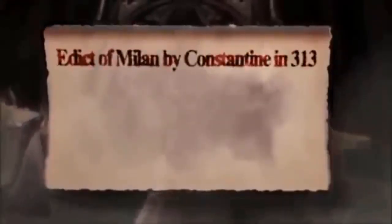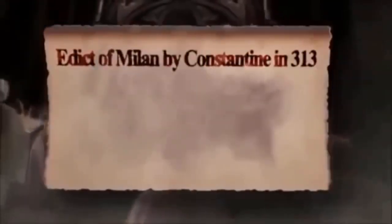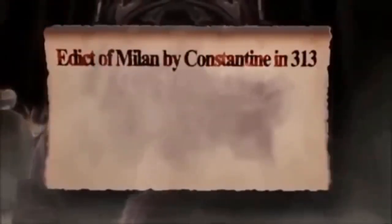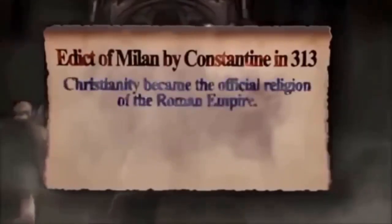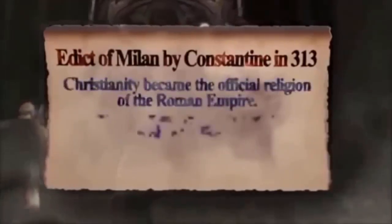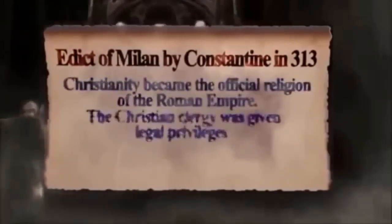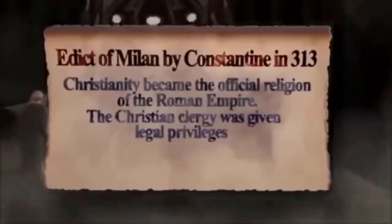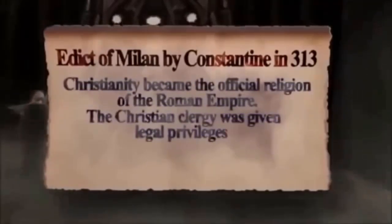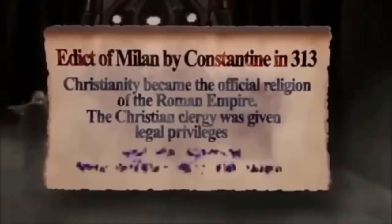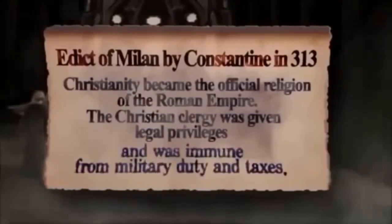The early church was oppressed by many emperors, but there was a turning point during the reign of Emperor Constantine in the third century. In 313, Emperor Constantine proclaimed the Edict of Milan. The edict approved Christianity as a legal religion of Rome and gave legal privileges and immunity from military duty and taxes to the Christian clergy.